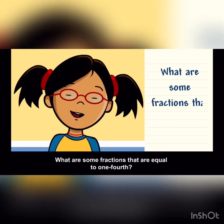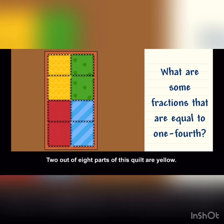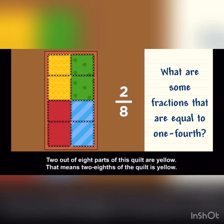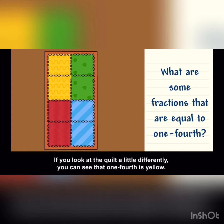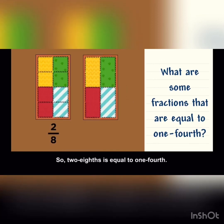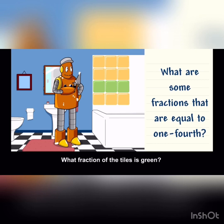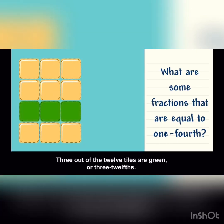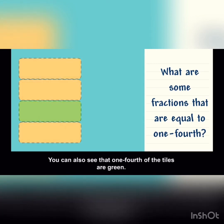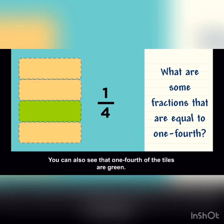What are some fractions that are equal to one fourth? Two out of eight parts of this quilt are yellow — that means two eighths of the quilt is yellow. If you look at the quilt a little differently, you can see that one fourth is yellow. So two eighths is equal to one fourth. What fraction of the tiles is green? Three out of twelve tiles are green, or three twelfths. You can also see that one fourth of the tiles are green. So three twelfths is equal to one fourth.